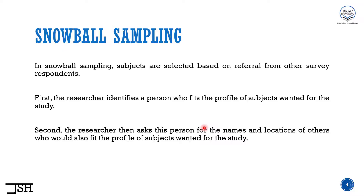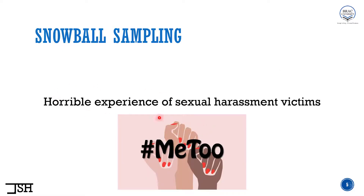When is it best to use snowball sampling? Usually snowball sampling is used where respondents are hard to find — for example, when dealing with sensitive research topics. For instance, consider this research topic: the horrible experience of sexual harassment victims. After the MeToo campaign, one might want to research this topic. As this is a sensitive topic, we cannot use volunteer sampling or self-select sampling here, because if I publicly announce the topic and invite people, many might hesitate to respond.